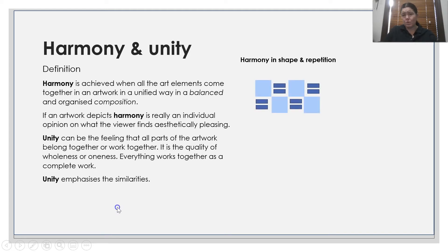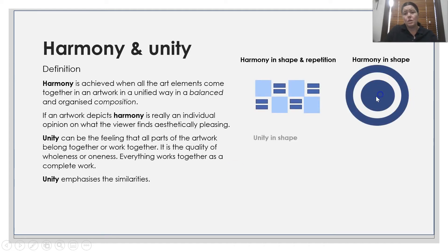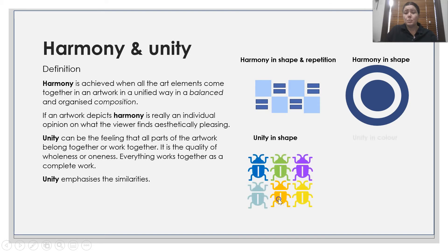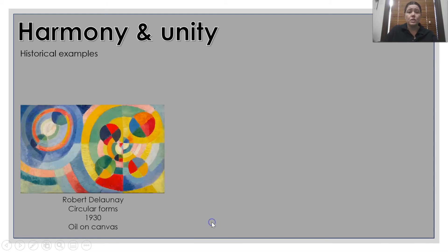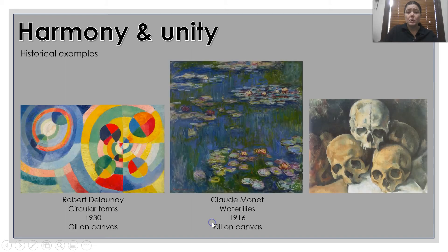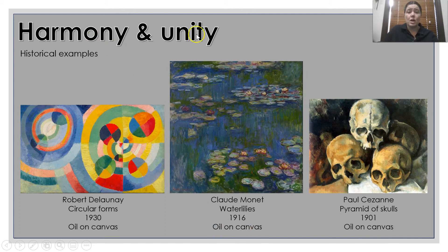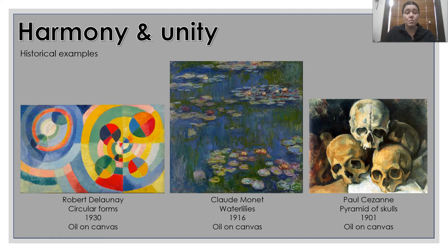You have harmony in shape and repetition, harmony in shape, unity in shape, and also unity in colour even though the shape is different. Just because these particular works have been chosen to demonstrate harmony and unity doesn't mean that they will be the same for you — you might have the opinion that they don't show those particular principles, and that's perfectly fine. For me, aesthetically, I think these skulls show great unity and harmony together — it works well as a oneness of peace.